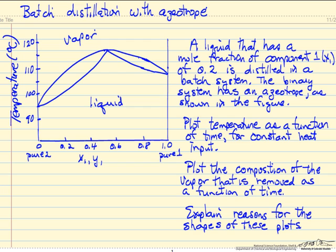In this example we'll look at distillation in a batch system, where we start out with a liquid that has a mole fraction of 0.2 of component 1. This particular system whose temperature mole fraction diagram is shown here has an azeotrope at about a mole fraction of 0.5.